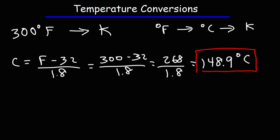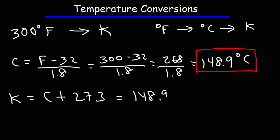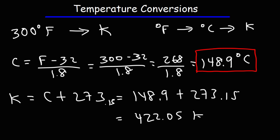Now that we have the Celsius temperature, we can get the Kelvin temperature by adding 273. So it's 148.9 plus 273 — and since we have a decimal value, we can use 273.15 — giving us 422.05 Kelvin. You may need to use discretion on when to add the 0.15: if your Celsius temperature is rounded to the nearest tenth, it may be wise to include it; if rounded to the nearest whole number, just add 273.